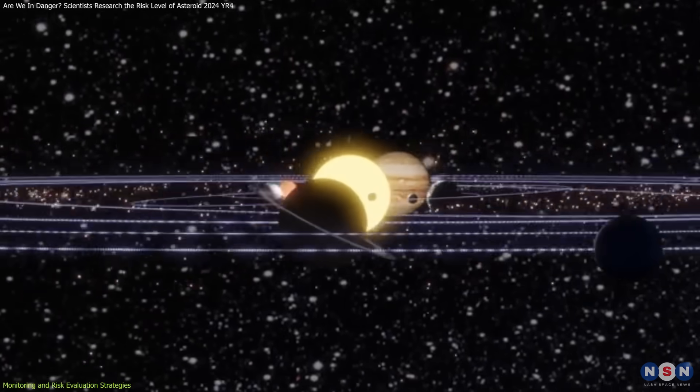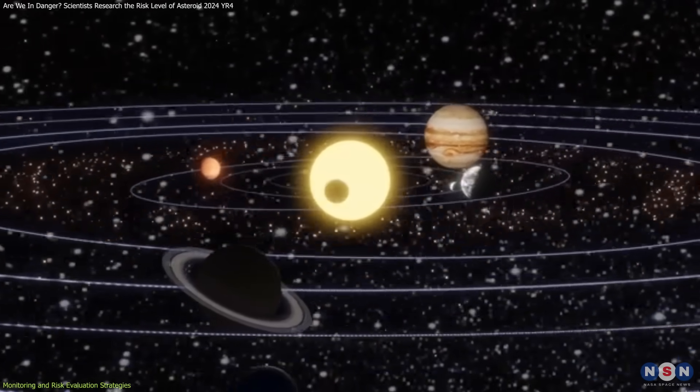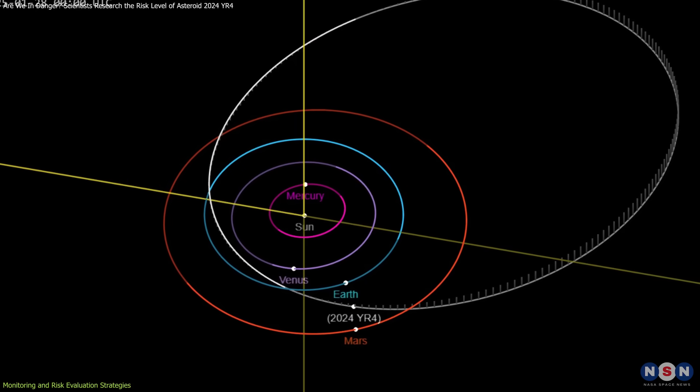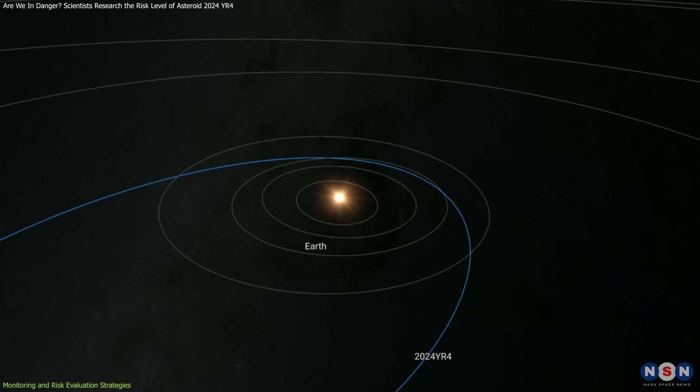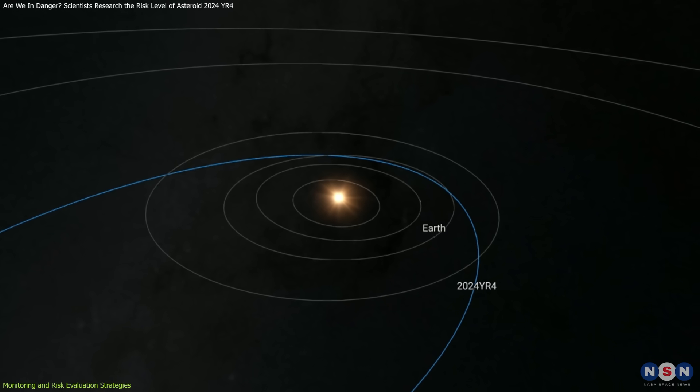By including such factors, scientists can produce a detailed and dynamic picture of an asteroid's future path, reducing uncertainties and improving predictive accuracy.